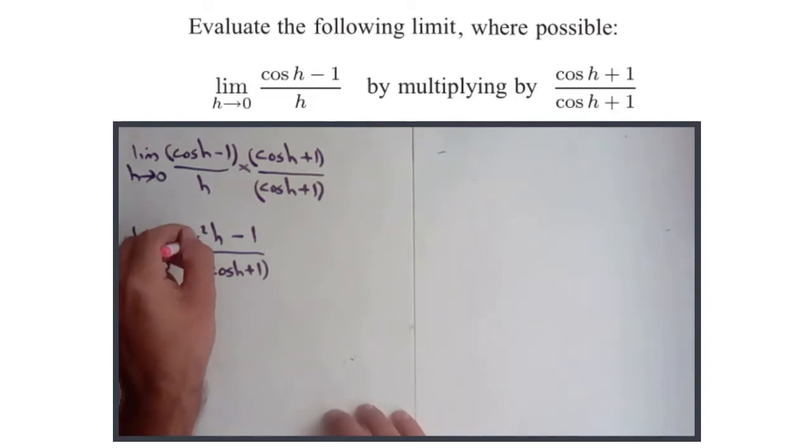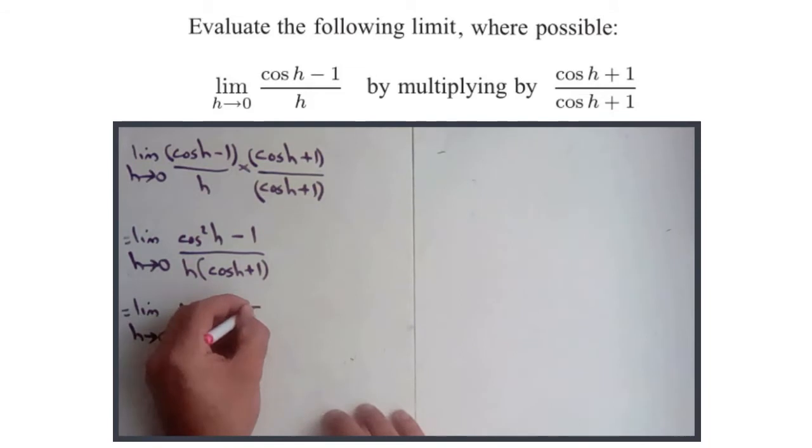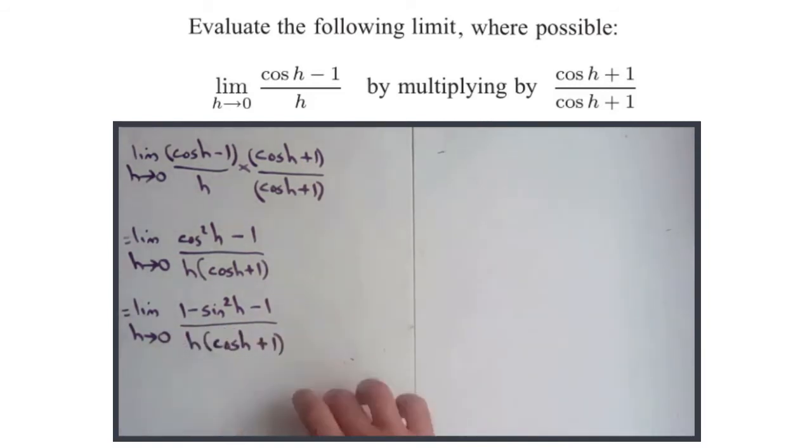H approaches 0 of 1 minus sine squared h minus 1 over h times cos h plus 1. So you can see very handily these ones cancel out, which is quite nice. And then we end up with minus sine squared h on the top, which I might just write as minus sine h squared, equals the limit.